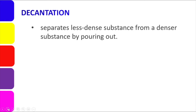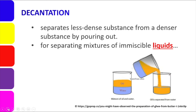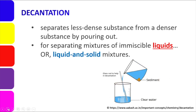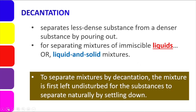Then you pour out one of them to separate them. Decantation is used for separating mixtures of immiscible liquids — liquids that do not mix, like oil and water. If miscible, they will mix. But in this case, we are talking about immiscible liquids. It can also be used for liquid and solid mixtures — as seen in the picture earlier — where you pour out the liquid part and the solid part remains. To separate mixtures by decantation, the mixture is first left undisturbed for the substances to separate naturally by settling down, and then you can perform the decantation or pouring out.